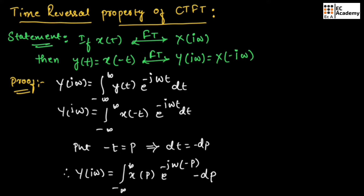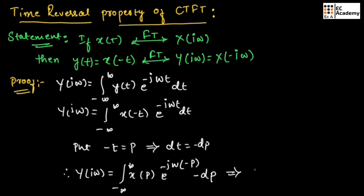Now if we compare this equation with the above equation, here in place of t we are having minus p. That is why we can write this equation as Y(jω) is equal to X(-jω). So this is the proof.